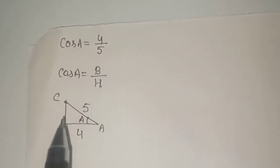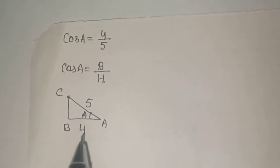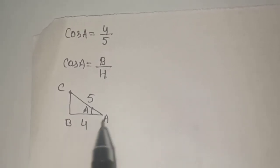Cos A is 4 by 5, so cos A is base upon hypotenuse. We will consider this is a triangle and this is the angle A. The value of base is given as 4, and value of hypotenuse is given as 5.